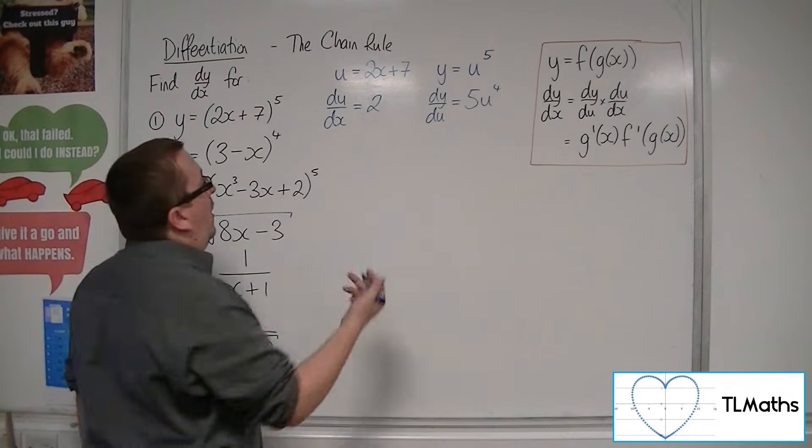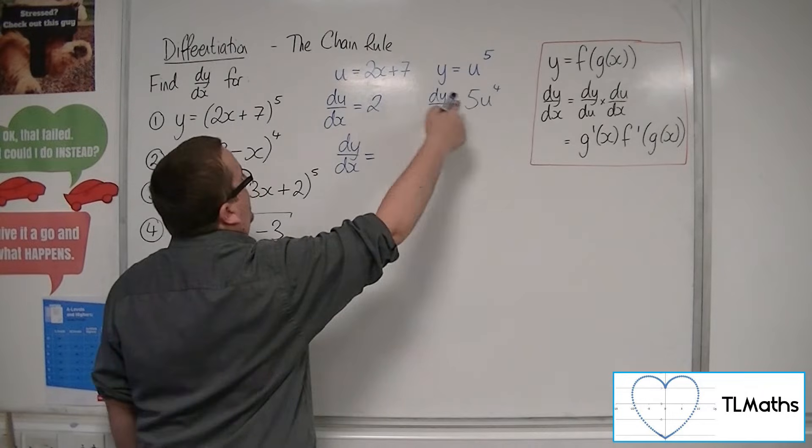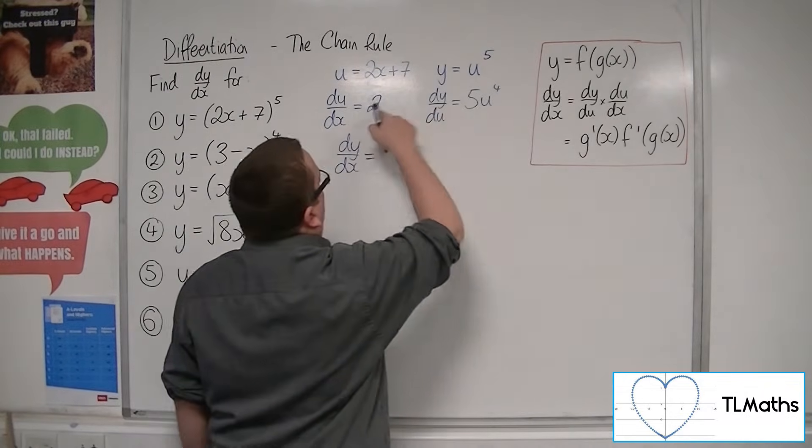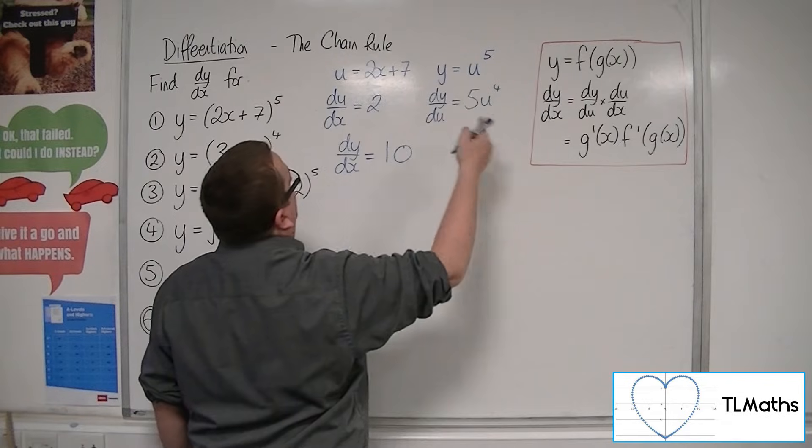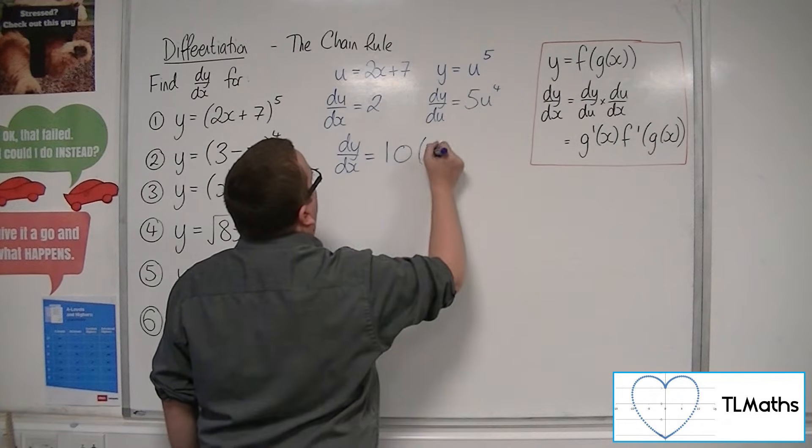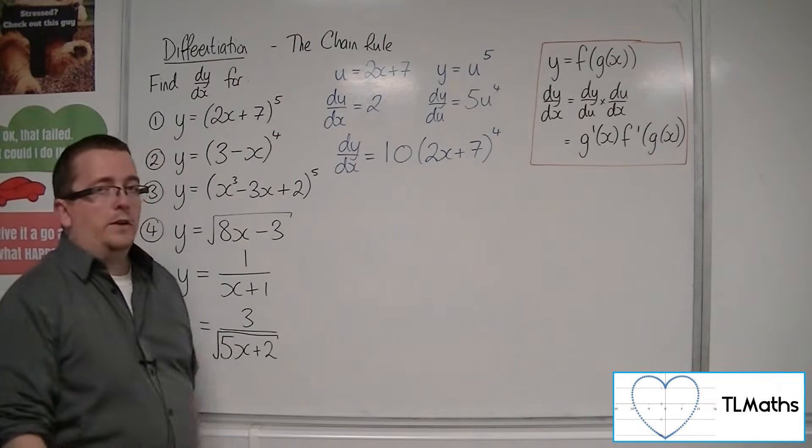So dy by dx is the product of these two. So we multiply those two together, I'm going to get 10u to the 4. And remember u is this 2x plus 7 to the 4. And so that is the derivative of that.